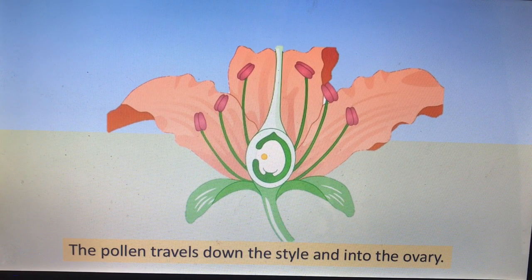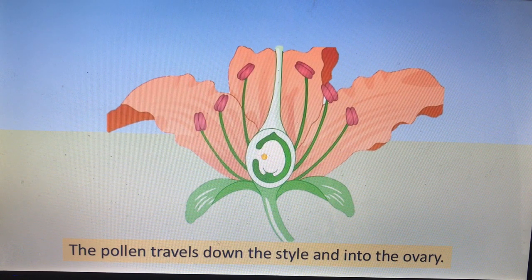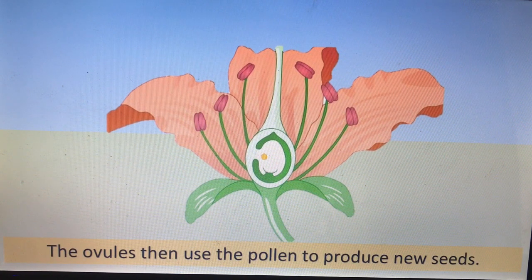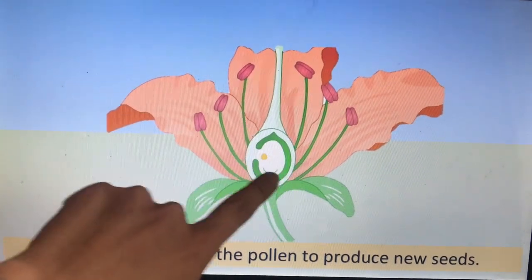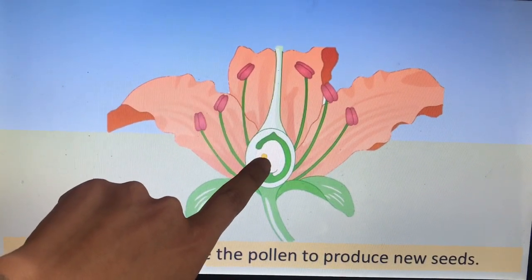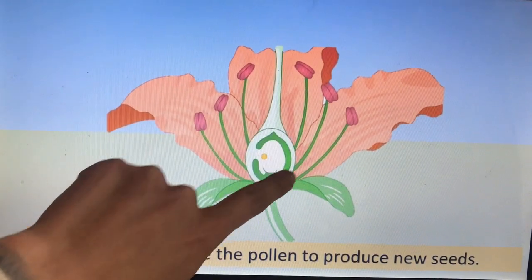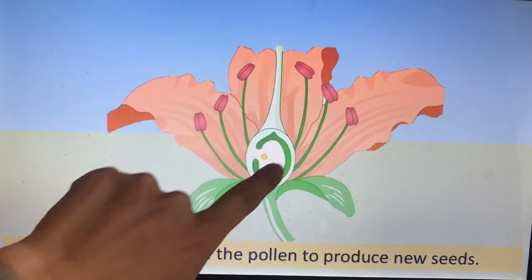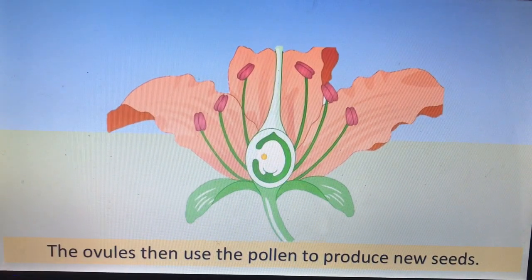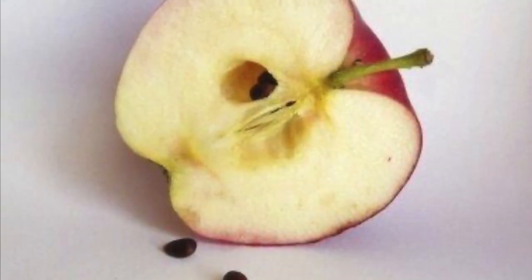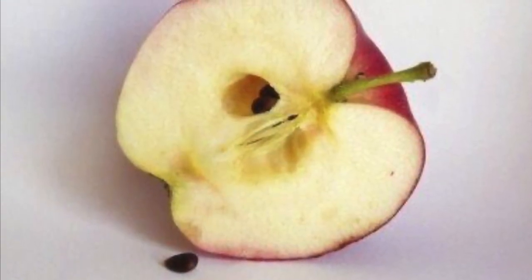Once it's got to the ovule, the two things fuse together — the ovule and the pollen fuse to create a fertilized cell, and that fertilized cell will then go on to turn into a seed. The ovary around the seed is what will go on to make the fruit of the plant.